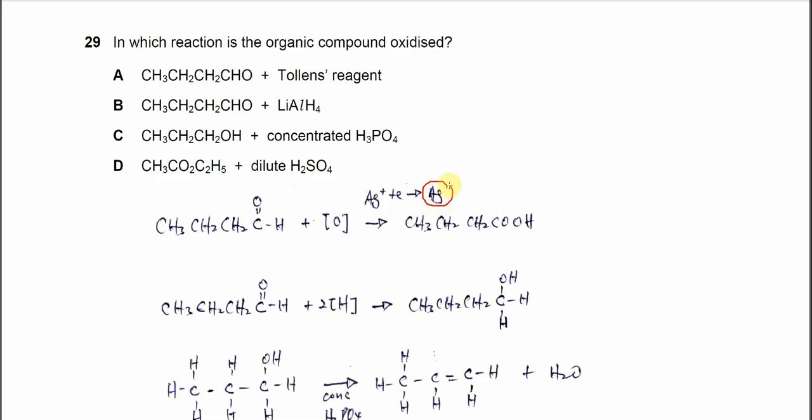So in this reaction, the butanal aldehyde gets oxidized. It goes from the aldehyde group to COOH, which means one oxygen is added to this compound. It goes from CHO to COOH, forming butanoic acid. So the answer of course is A.